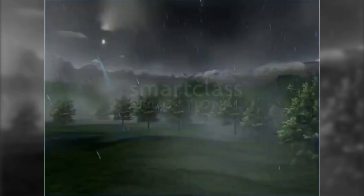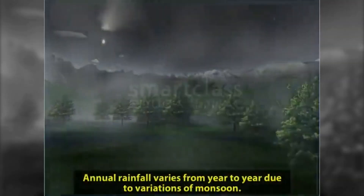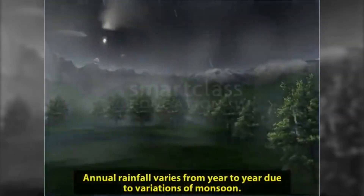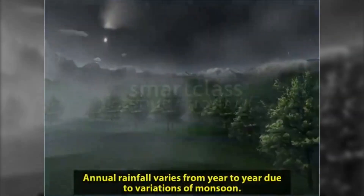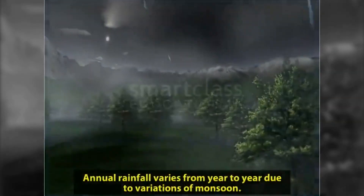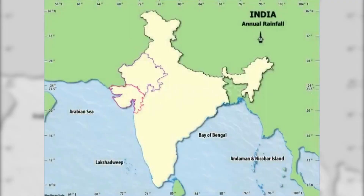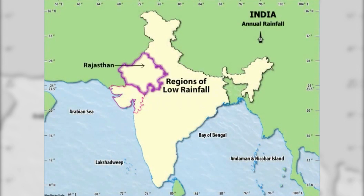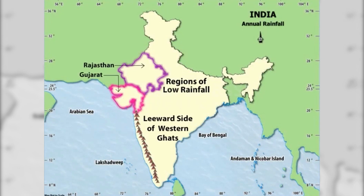Annual rainfall varies from year to year due to variations of the monsoon. This variation is more pronounced in regions of low rainfall, such as parts of Rajasthan, Gujarat, and the leeward side of the Western Ghats.